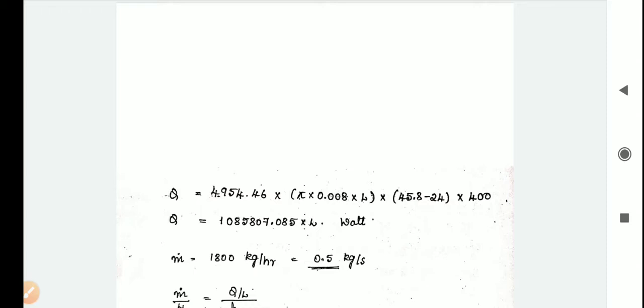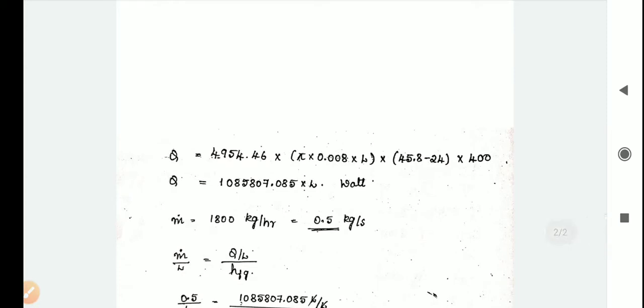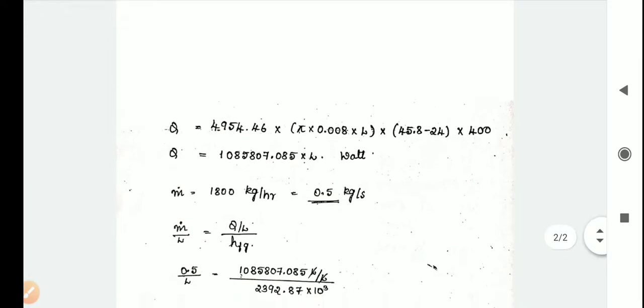Q equals 4954.46 into pi into d, 0.008, and length is unknown, so L, into 45.8 minus 24, into 400. You will get the Q value in terms of L: 1085807.085 into L watts.